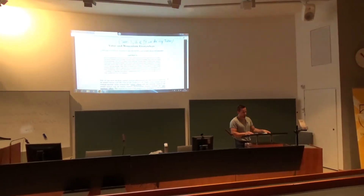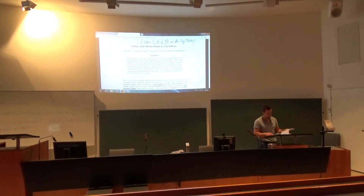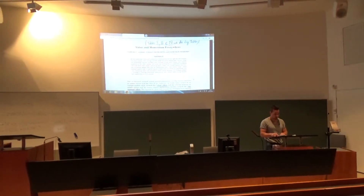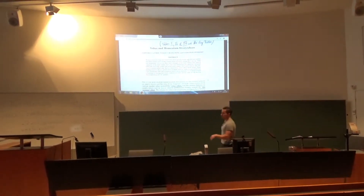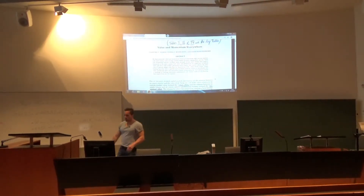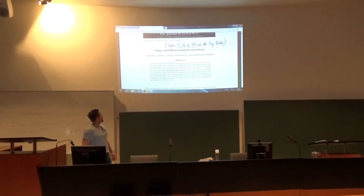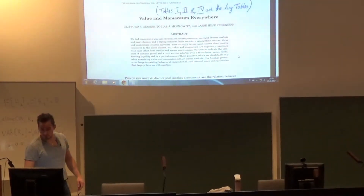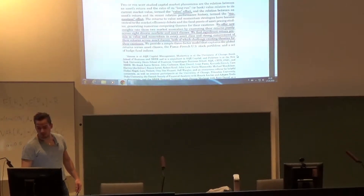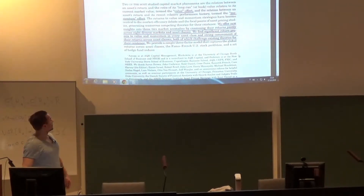Let's go through the paper step by step. The key tables in this paper are Table 1, 2, and 4 — all the other tables you can more or less neglect, but we will talk about them.